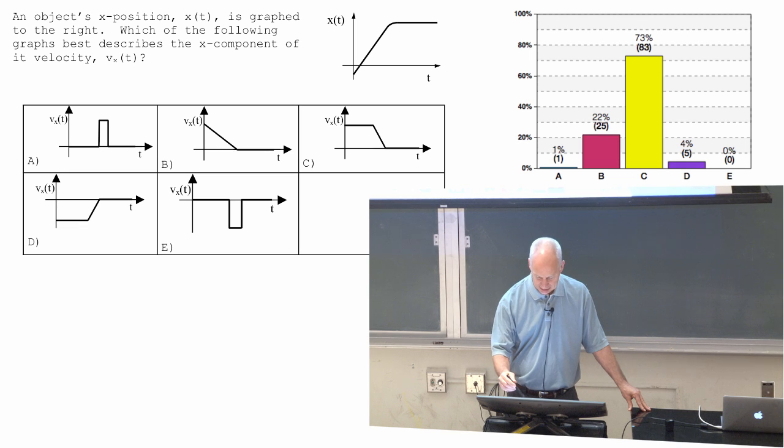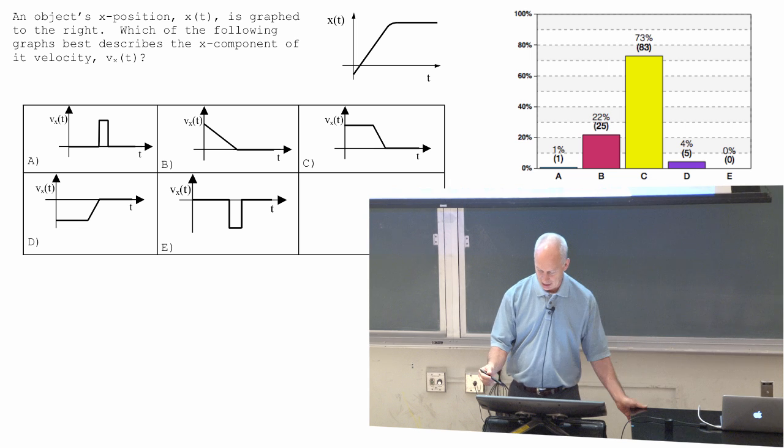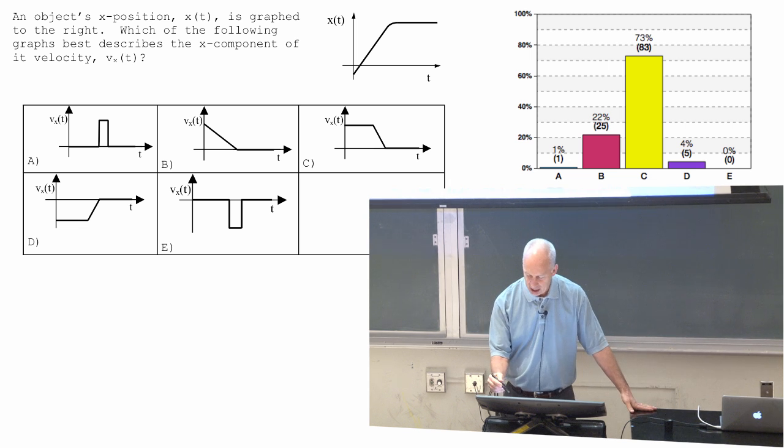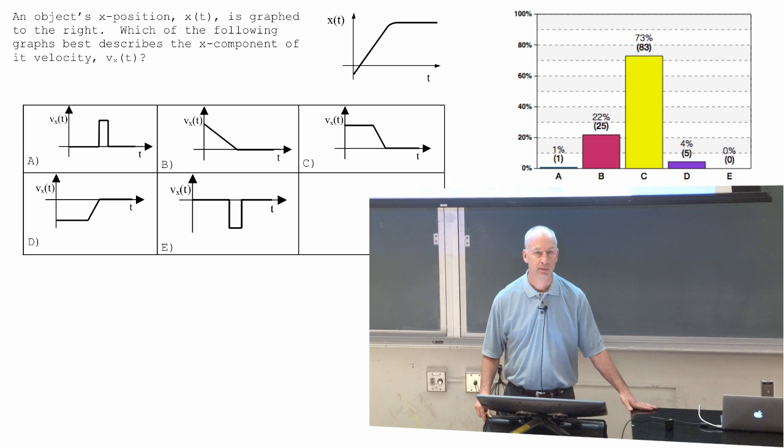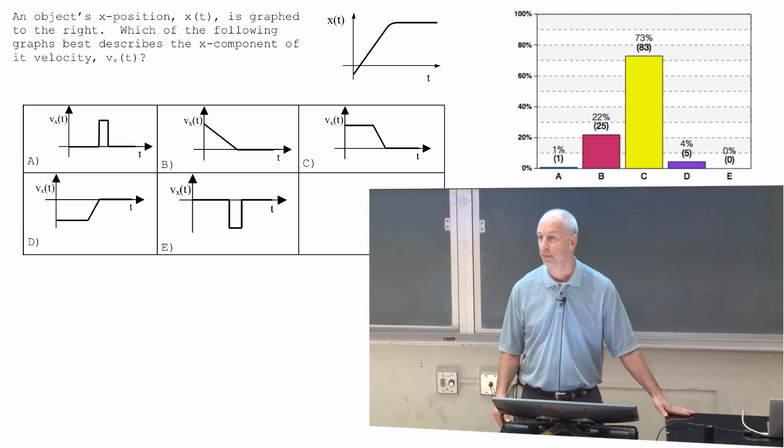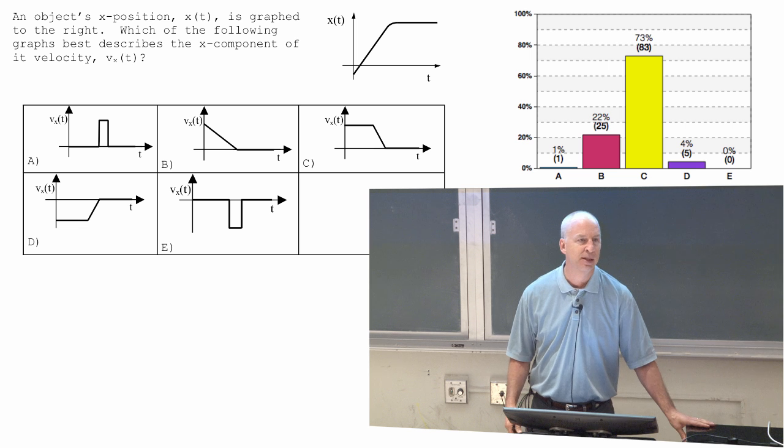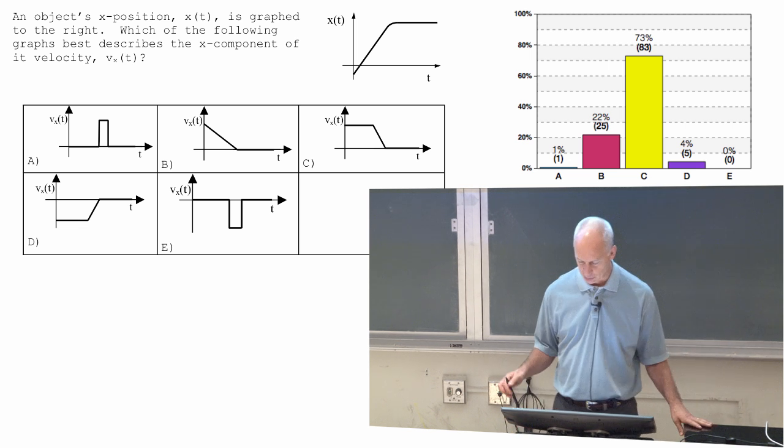The bulk of you answered C, so I'm not going to pay too much attention to the other ones. x of t has a positive slope at the beginning and constant slope. So its rate of change is constant and positive at the beginning.